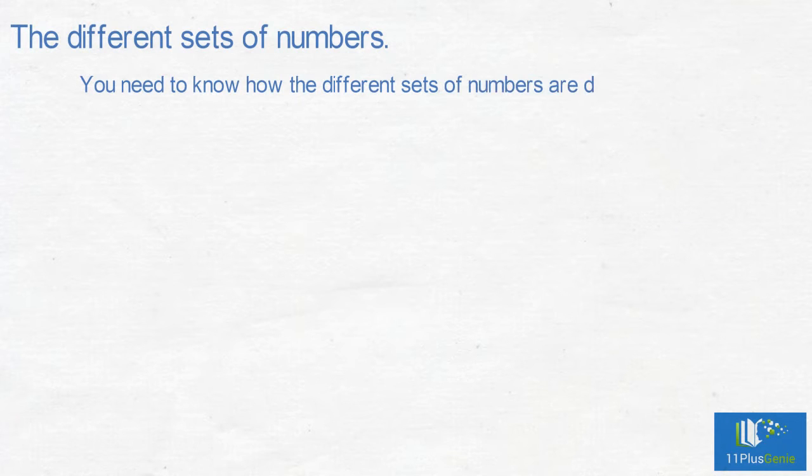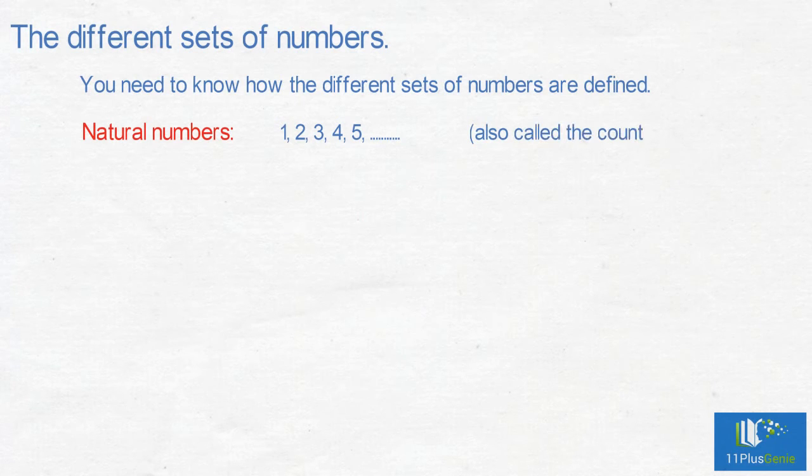The different sets of numbers. You need to know how the different sets of numbers are defined. Natural numbers are 1, 2, 3, 4, 5, etc. They are also called the counting numbers.